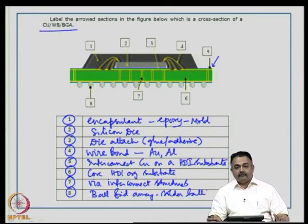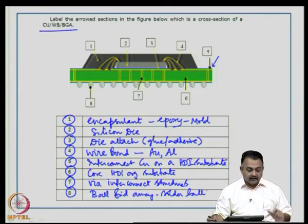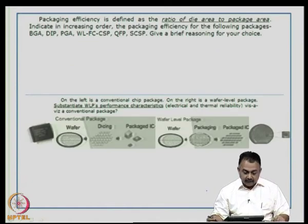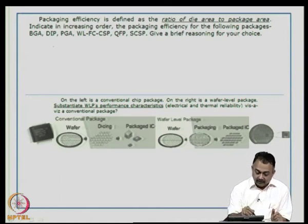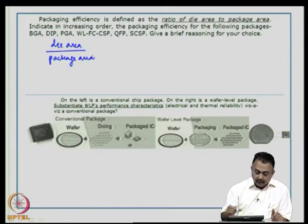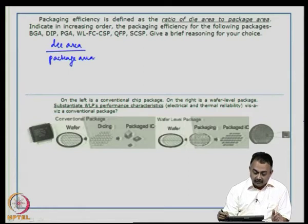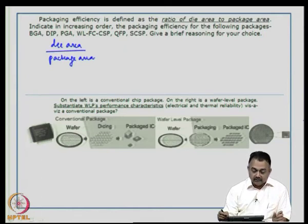Packaging efficiency is defined as the ratio of die area to package area. You are asked to rank the following packages in increasing order of packaging efficiency: BGA, DIP, PGA, wafer-level flip chip CSP, QFP, and stacked chip size package.